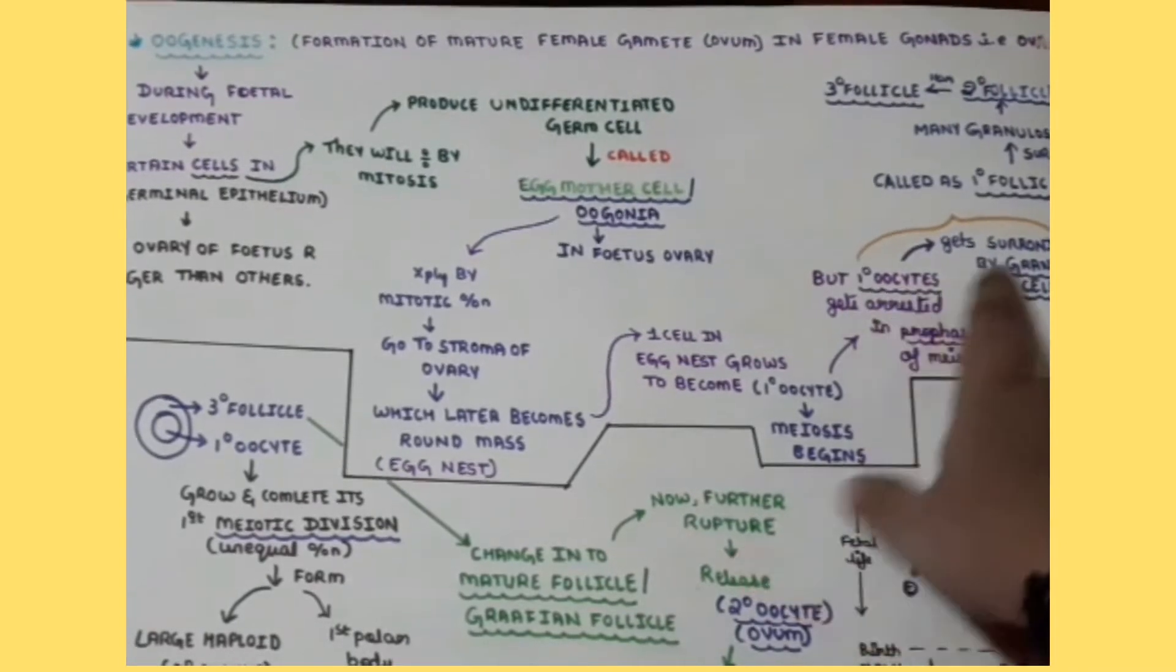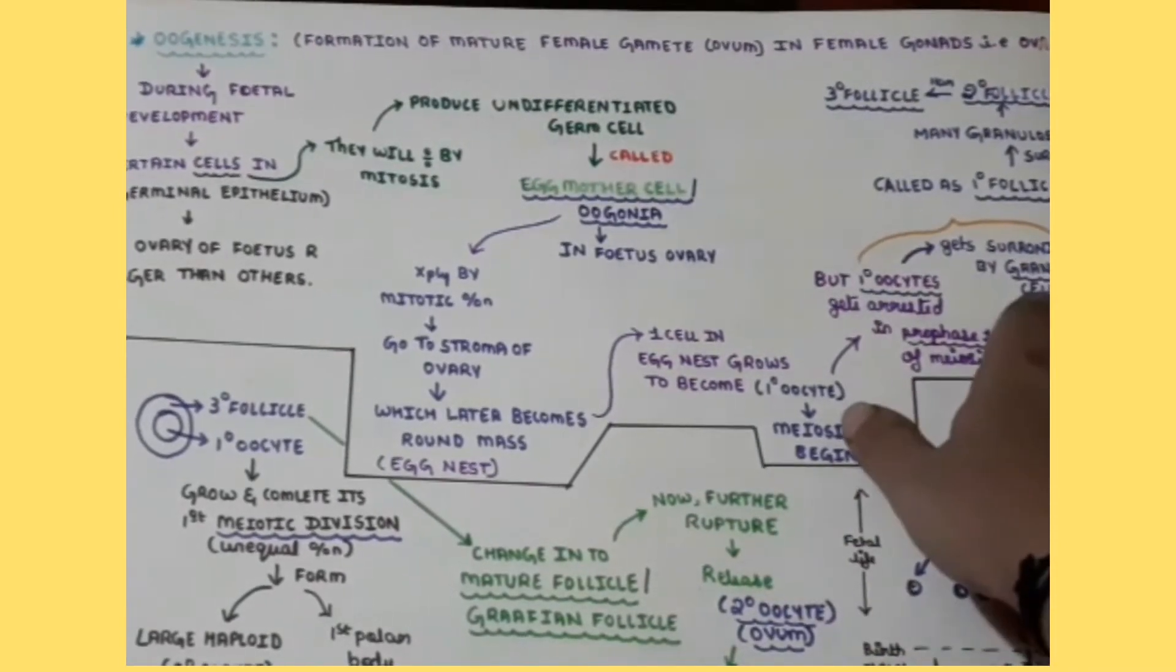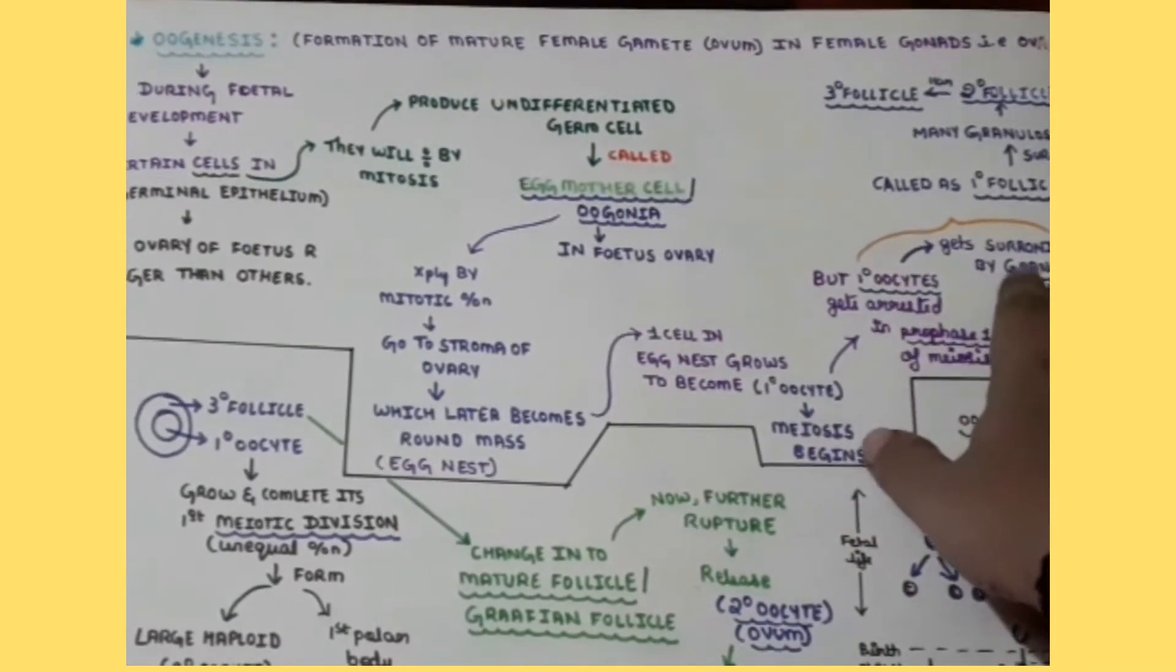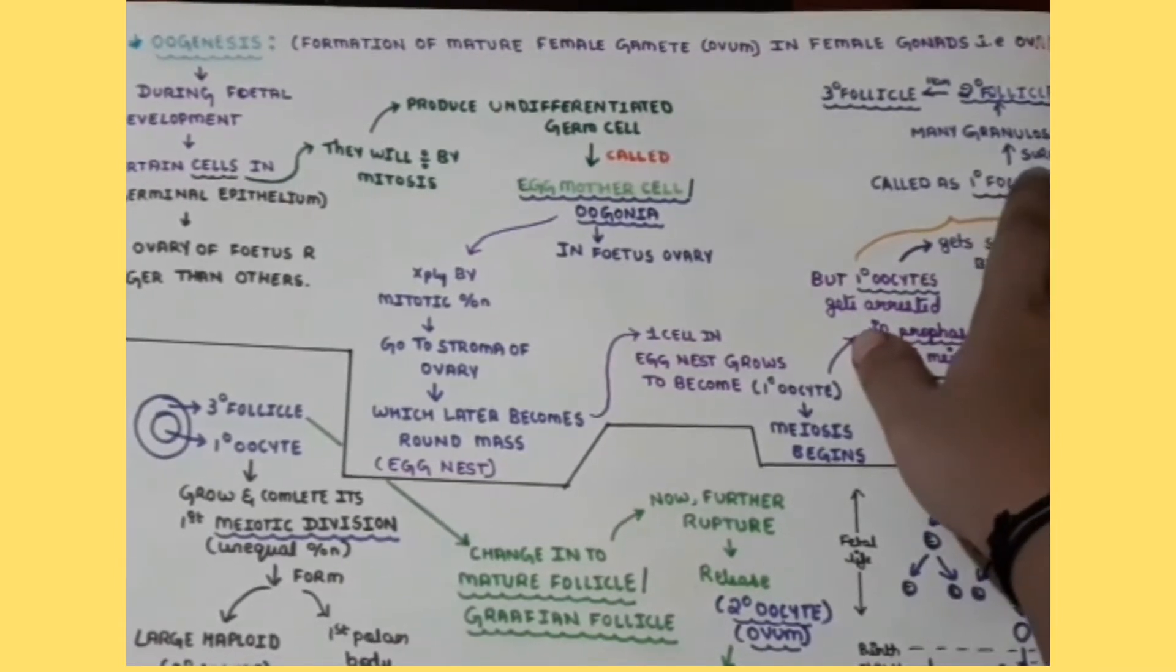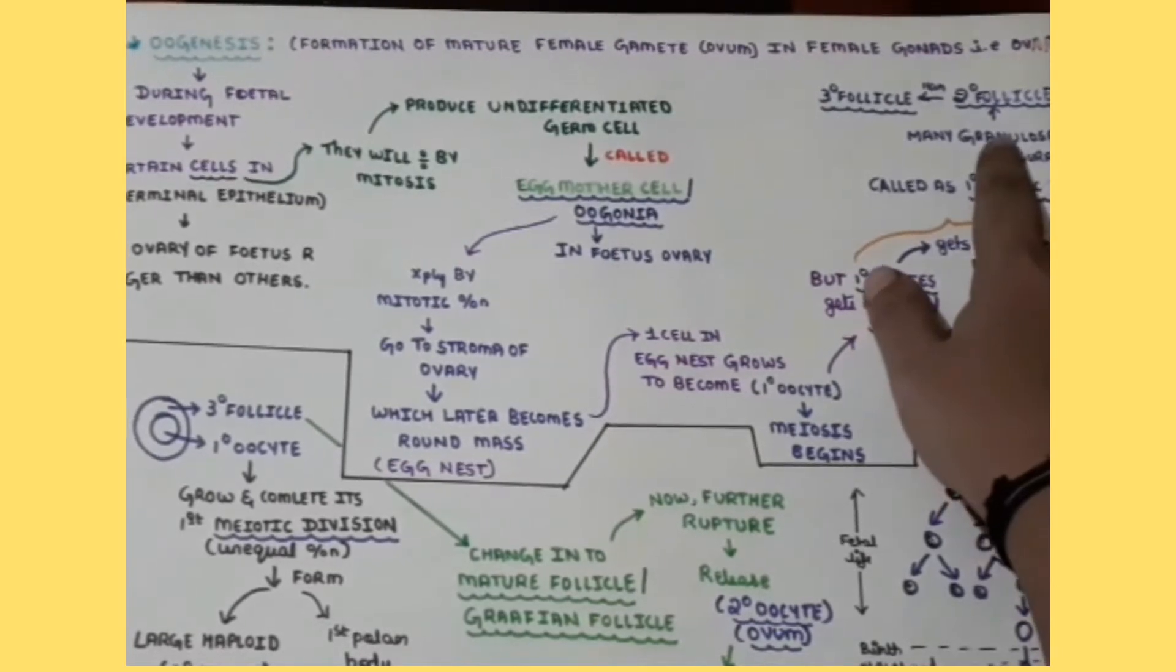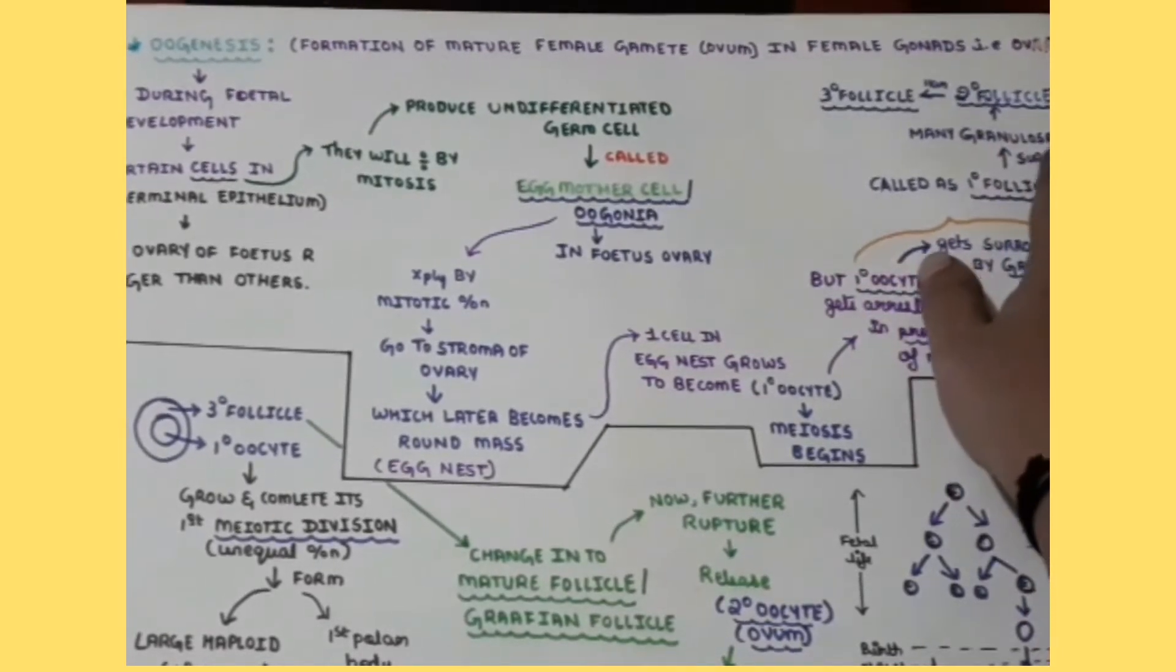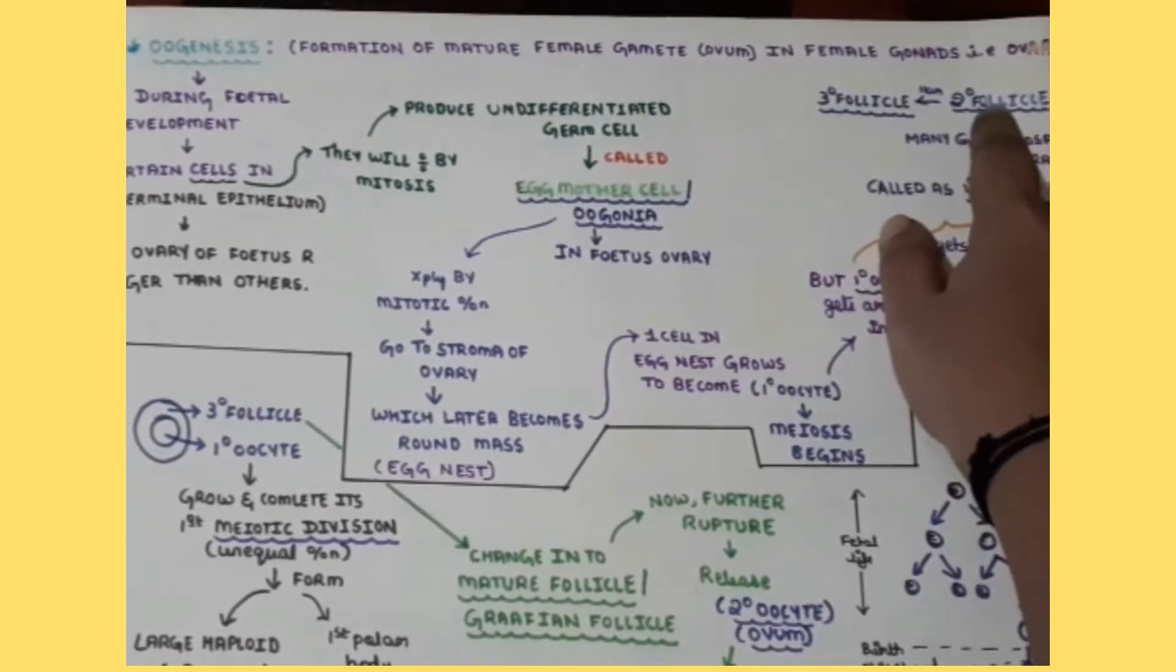After arresting it will be surrounded by the granulosa cells, so this primary oocyte along with the surrounding of granulosa cells, you can call it as a primary follicle. This primary follicle again will be surrounded by the granulosa cells and hence it will form secondary follicle.